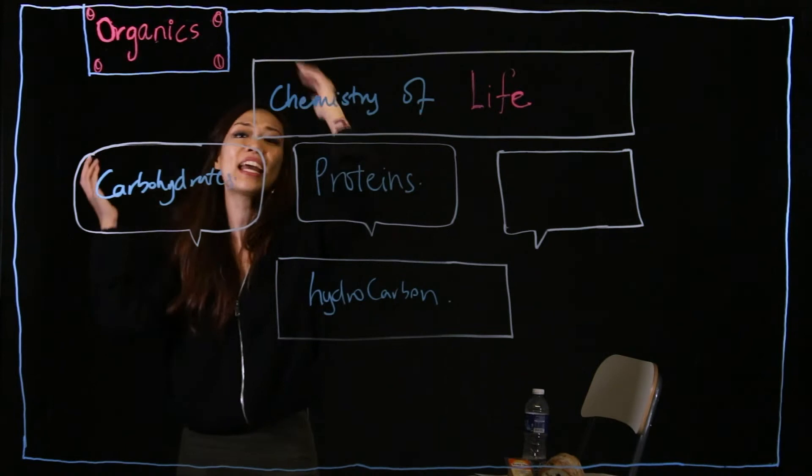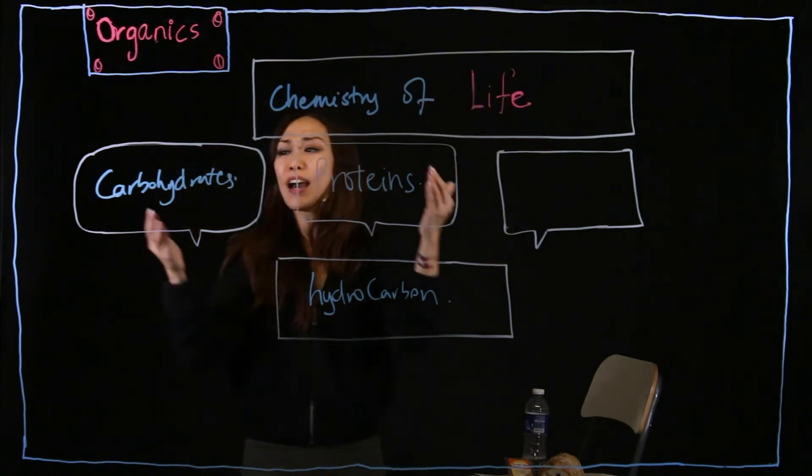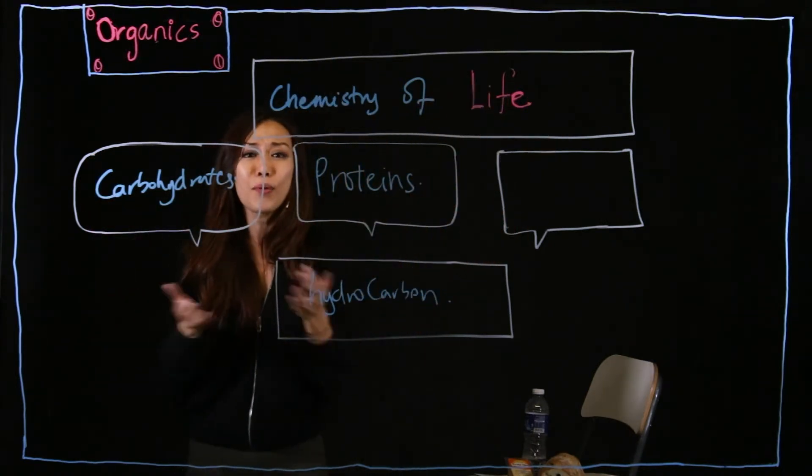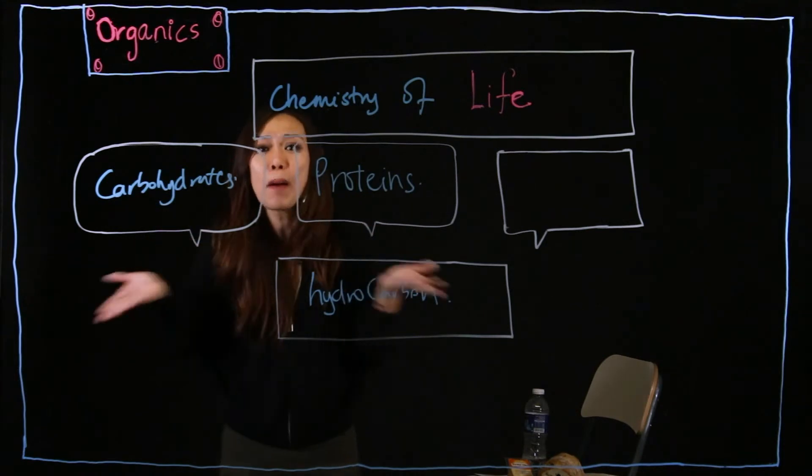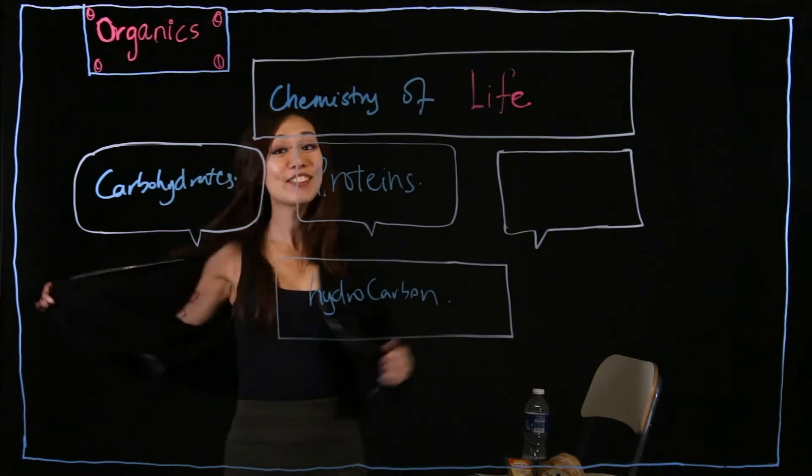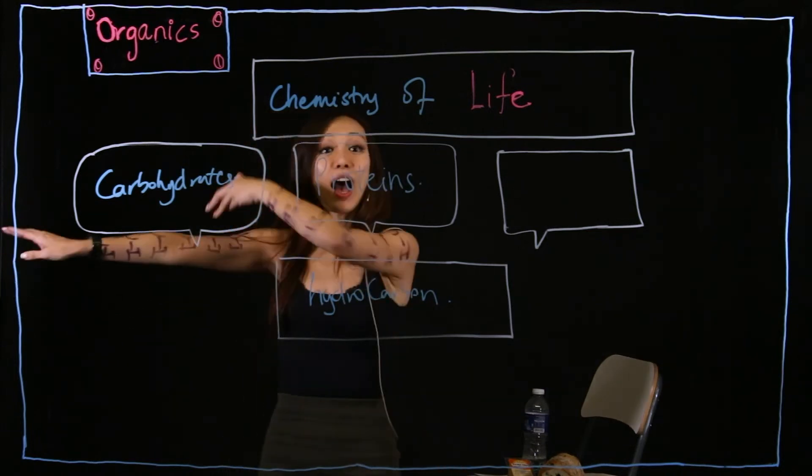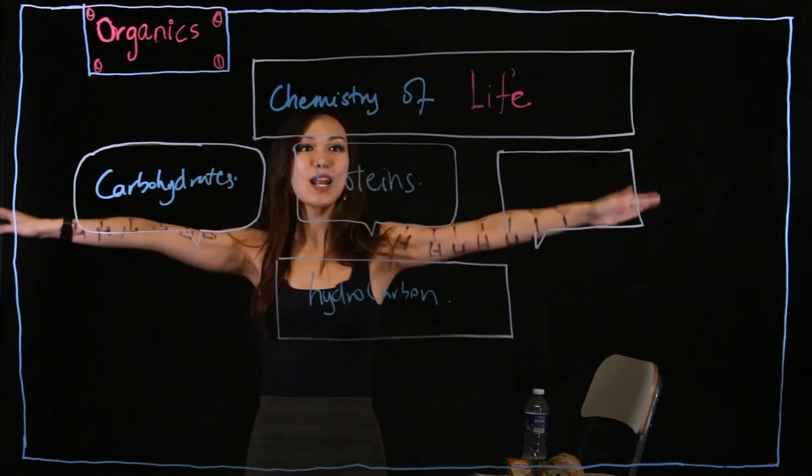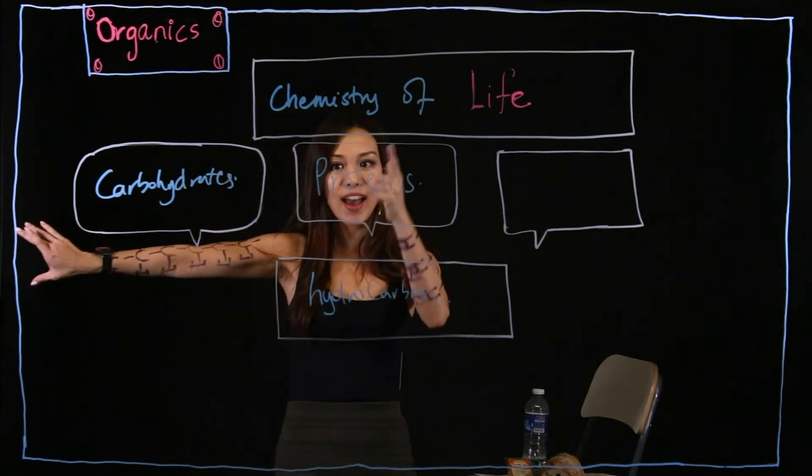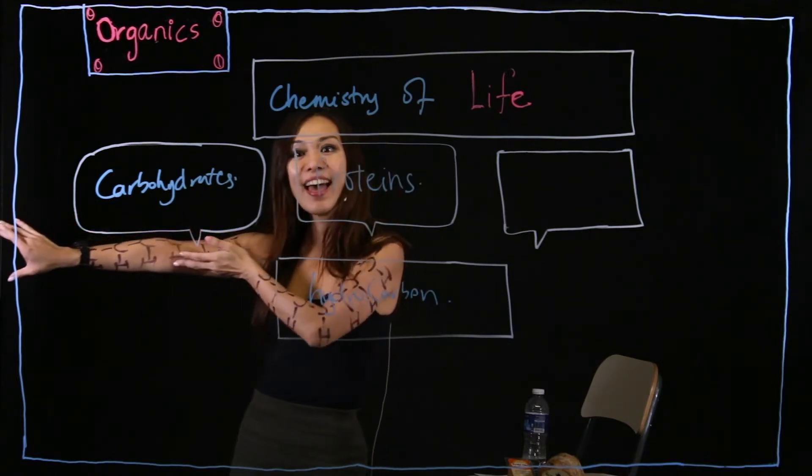Now if I say talk so much about organics and I say it's the chemistry of life, beside the food that we eat, where on earth can I find organic compounds? Well, as you can see, our body is made out of organic compounds as well: carbon and hydrogen.